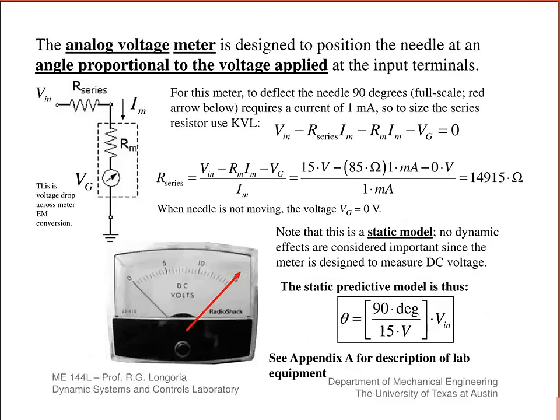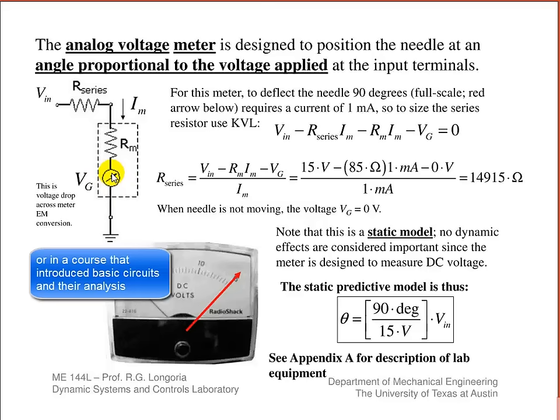Just to remind you, this is a real simple DC circuit. You put in an input voltage, and we want to see what series resistance would be needed to set the full-scale deflection. This symbol represents the galvanometer movement or meter movement, which is the type of modeling you might have done in your dynamic systems class. This is an electromechanical conversion that we typically model with a gyrator, and I'll show you that next time.